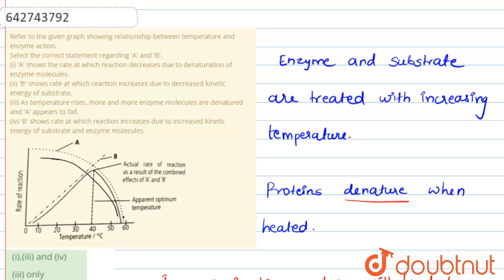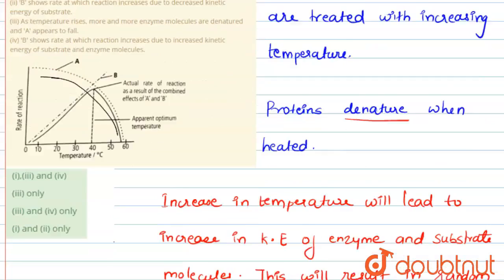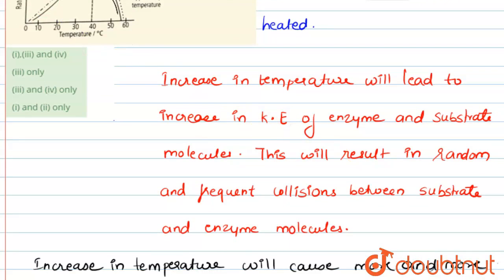Statement 4 says: B shows the rate at which the reaction increases due to increased kinetic energy of substrate and enzyme molecules. As we discussed, if we increase the temperature, the kinetic energy of the enzyme molecules will increase, leading to frequent collisions between them and an increase in the rate of reaction. So statement 4 is also correct.